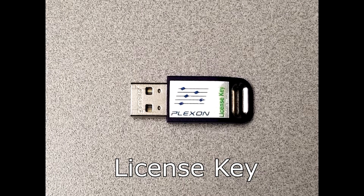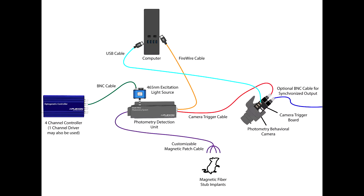You will also need a license key with Signalizer and photometry to operate the system. If you are using a four channel controller, you will also need a Radiant license key. The Radiant license may be on the same key as the Signalizer with photometry licenses, or if Radiant was previously purchased, you may have a separate key for the Radiant software that would need to be used.